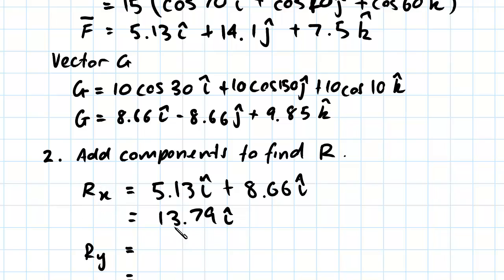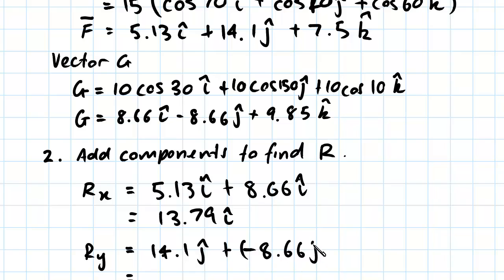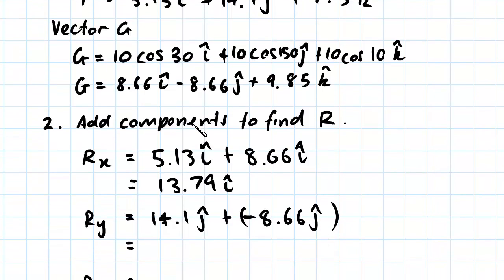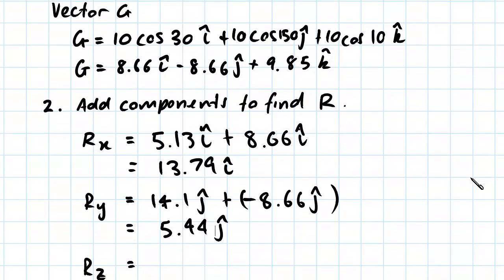Likewise, we'll do the same for the y direction. Our y will simply add 14.1j to negative 8.66j. Adding those two together, we end up with 5.44j. We'll do exactly the same for the z component, so we simply add 7.5k.